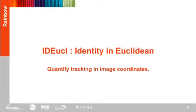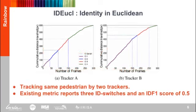While the existing tracking metrics are persuasive performance indicators of a tracking algorithm, they do not quantify the proportion of the ground truth the tracker is able to preserve identity over in the image coordinate space. To bridge this gap, we propose IDE_UCL, a metric which gauges a tracker based on its efficiency in maintaining consistent identity in the image coordinate space. To intuitively understand our metric, consider an example shown in the above figure, where two trackers A and B compute different identities for the same ground truth trajectory. Tracker A commits three identity switches in the first 150 frames, while tracker B maintains consistent identity for the first 150 frames but commits three identity switches in the latter 150 frames. However, the existing metrics report the same score for both trackers, thereby unable to distinguish between them.